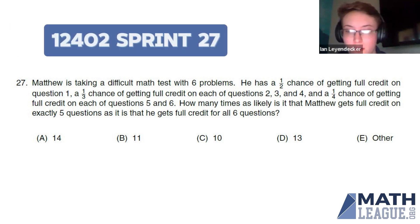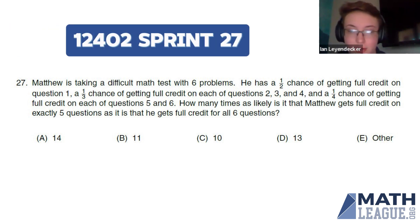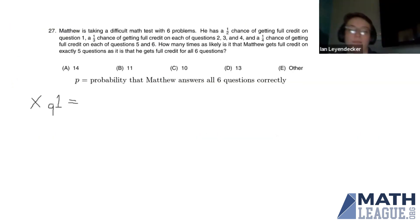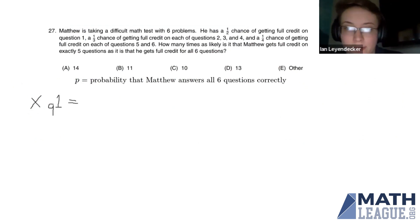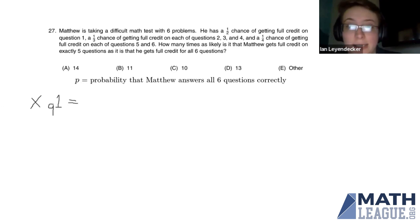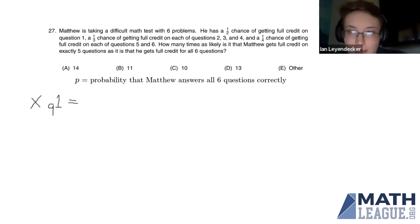We're going to go over problem number 27 for the sprint round. Problem 27 reads: Matthew is taking a difficult math test with six problems. He has a one-half chance of getting full credit on question one, a one-third chance of getting full credit on each of questions two, three, and four, and a one-fourth chance of getting full credit on each of questions five and six. How many times as likely is it that Matthew gets full credit on exactly five questions as it is that he gets full credit for all six questions?